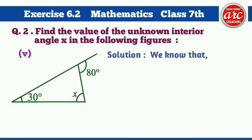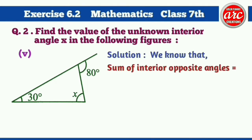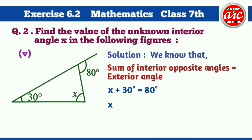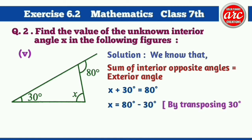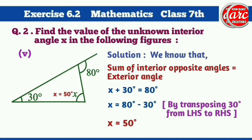Part 5 solution: We know that the sum of interior opposite angles is equal to the exterior angle. X plus 30 degrees is equal to 80 degrees, or X is equal to 80 degrees minus 30 degrees by transposing 30 degrees from the left-hand side to the right-hand side. So X is equal to 50 degrees. Hence, angle X is equal to 50 degrees.